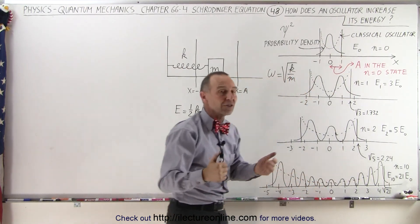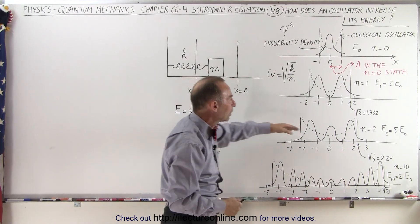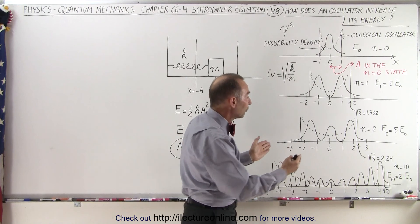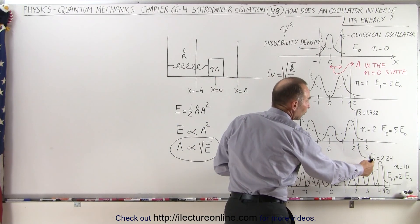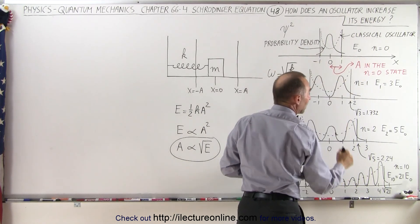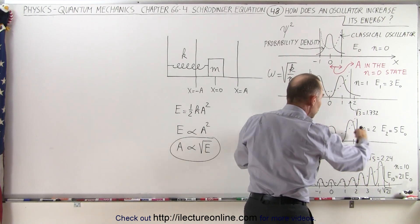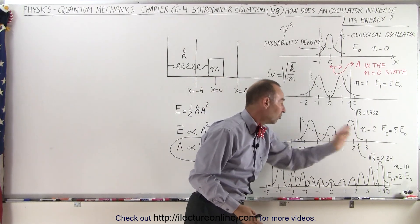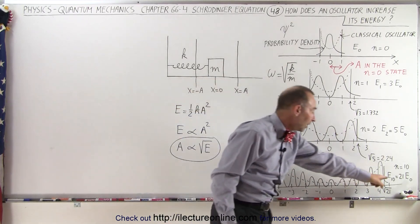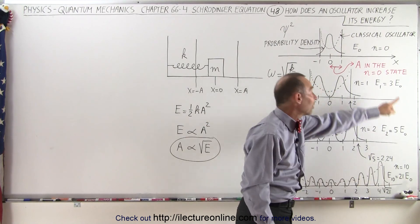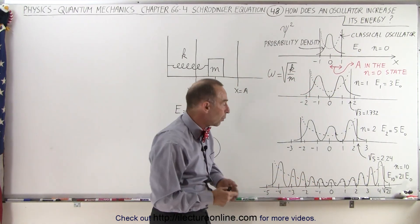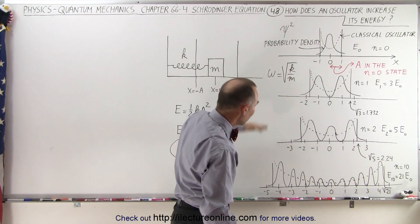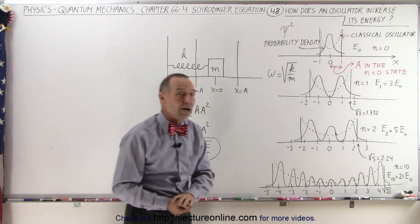If we go to the n equals two state, the energy is five times the original energy at the n equals zero state, and therefore the amplitude of oscillation increases to the square root of five. The square root of five is 2.24, so now we have a new picture of what the oscillatory state looks like for the n equals two state — the amplitude has jumped to the next distance. If we go all the way to the n equals 10 state, the energy at that level is 21 times the energy at the n equals zero state. We take the square root of 21, which is about 4.58, and that's what the probability density function of the n equals 10 quantum state of a quantum oscillator looks like.